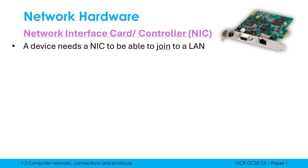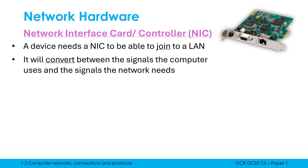In a desktop computer, the customer would only see the bit sticking out the back with an ethernet port, for example, and that's kind of its key function — to have that port. What the NIC does is convert between the signals the computer uses and the signals the network needs. So if the network is an ethernet network, the NIC is converting between the signals the CPU outputs and the signals which ethernet requires.